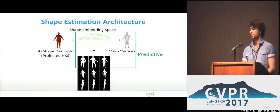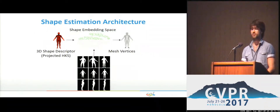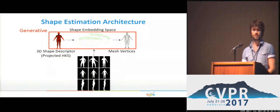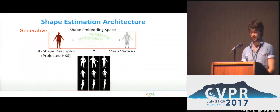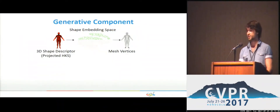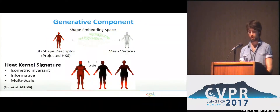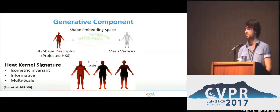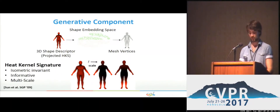A generative, a predictive, and a cross-model one. The generative component can invert pose-invariant 3D shape descriptors to reconstruct the shape in a neutral pose via shape embedding space. It is based on the heat kernel signatures, with properties that make it a very suitable choice to consistently represent human body shapes under different poses.